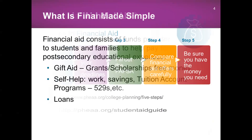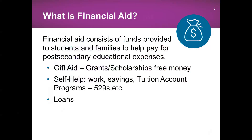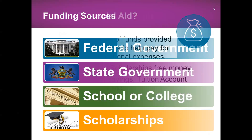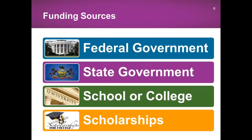When we talk about financial aid, we will discuss gift aid, which could be in the form of grants and scholarships, self-help money — money that you receive from working, your savings, maybe some tuition accounts such as 529 programs — and of course loans. These sources are available to help you pay for your educational costs. The federal government, state government, schools and colleges, and scholarships are your primary funding sources for financial aid.